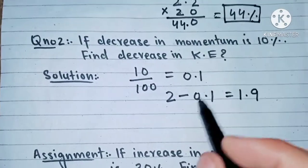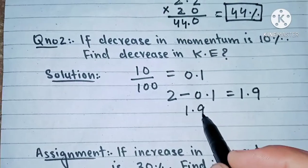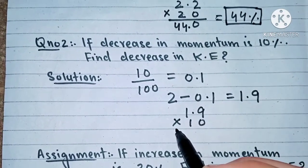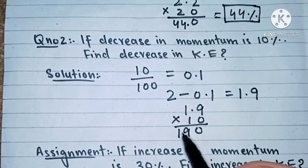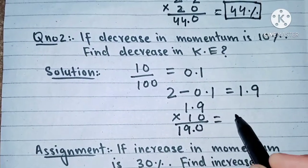1.9 multiplied by 10, and we get 19 percent.